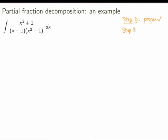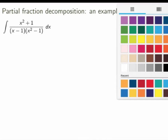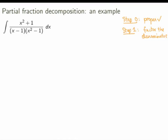So what is step 1 in partial fraction decomposition? The first step is to factor the denominator. We want to rewrite the denominator as a product of linear factors and irreducible quadratic factors. You may think it's already factorized because it's a linear and a quadratic factor, but x squared minus 1 is not irreducible. You can rewrite it as a product of two linear factors: x squared minus 1 is equal to x minus 1 times x plus 1.